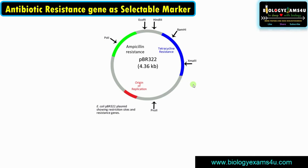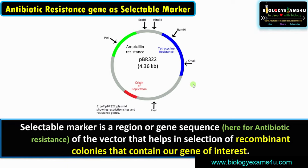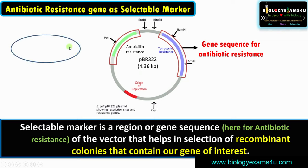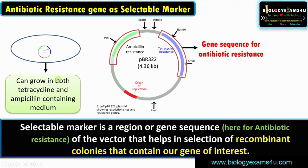In this section we'll discuss how the antibiotic resistant gene works as a selectable marker in the selection of recombinant colonies. A selectable marker is a gene sequence — here the antibiotic resistance gene of the vector — that helps in the selection of recombinant colonies containing our gene of interest. Taking PBR322 vector as an example: it has two selectable marker regions — the ampicillin resistance region and the tetracycline resistance region. If a bacterium has this vector with both selectable markers intact, it can grow in both tetracycline and ampicillin-containing medium.